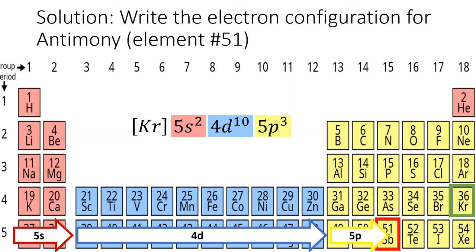Now I'm only three spaces away from my goal. So the next subshell is the 5p. I write 5p³ for a full electron configuration of krypton, 5s², 4d¹⁰, 5p³.